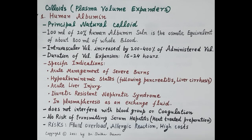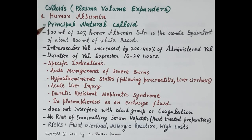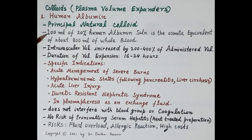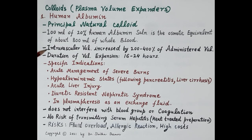Human albumin is a colloidal intravenous fluid preparation that is natural — not man-made. It is principally a natural colloid derived from pooled human plasma. Albumin accounts for 80 percent of protein in plasma and exerts high osmotic pressure. Thus, 100 ml of 20 percent human albumin preparation is the osmotic equivalent of about 800 ml of whole blood. Furthermore, 20 percent human albumin draws additional fluids from the tissues, increasing intravascular volume by 200 to 400 percent of the administered volume.